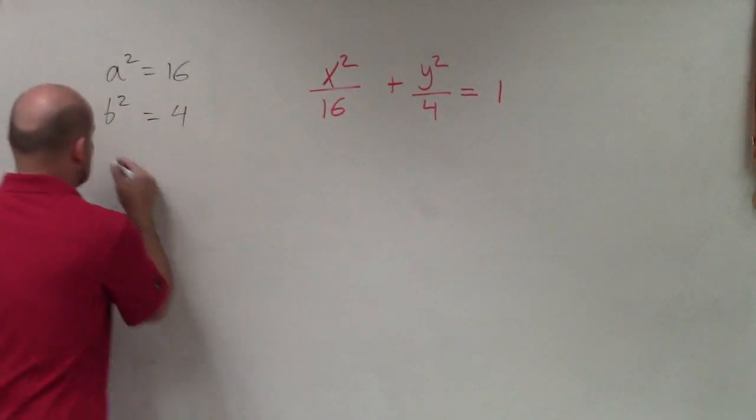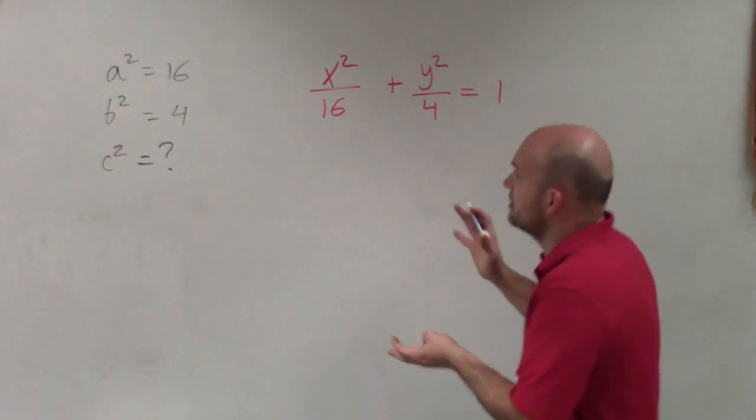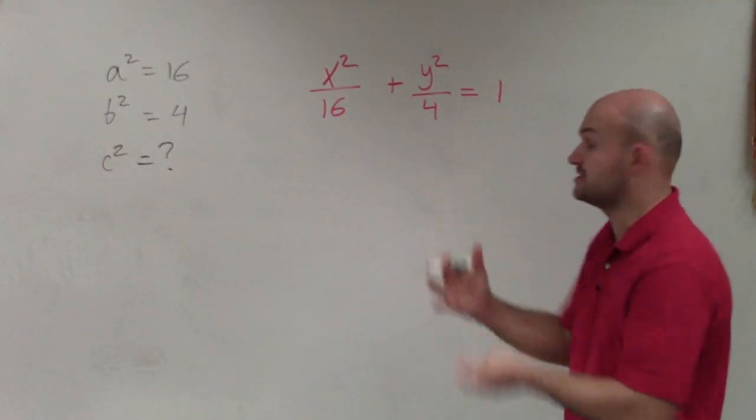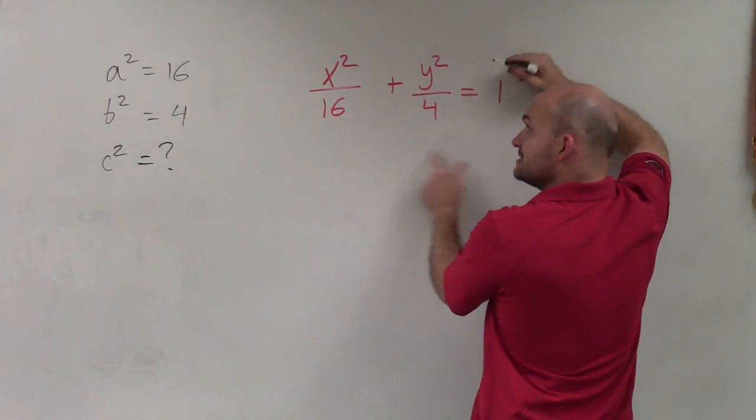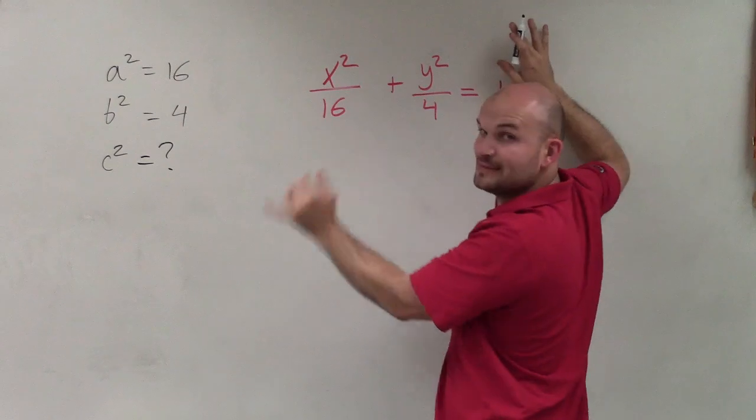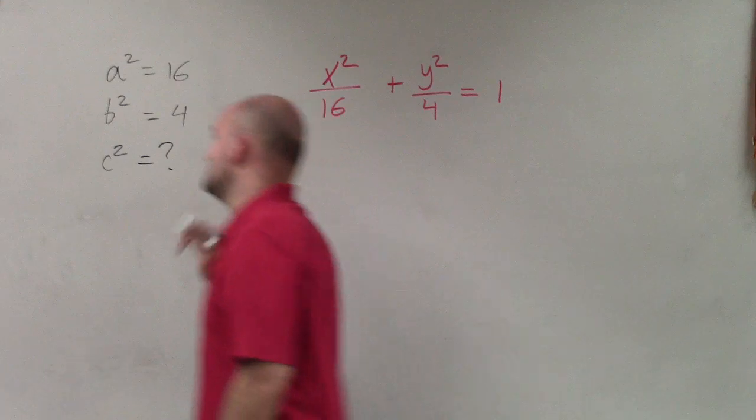The last thing we need to figure out is what is c squared. So automatically, the first thing I want to do is identify what is my a squared, what is my b squared. And you've got to make sure that your equation is equal to 1, which in this case it is. Then a squared for ellipses is always going to be the larger denominator, which in this case was 16.